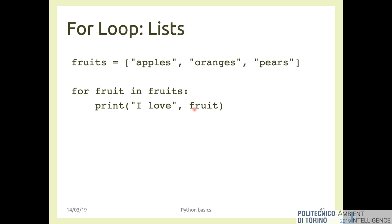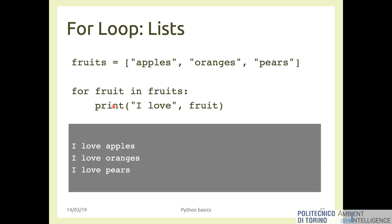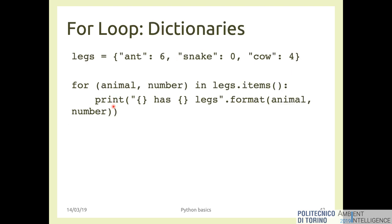Starting from here today: a simple example of how to print a list and every single element in it. You have a list that contains some fruits, then you perform a for loop — `for fruit in fruits: print('I love', fruit)` — so Python will print 'I love apples', 'I love oranges', 'I love pears' in that order, because the list is ordered.